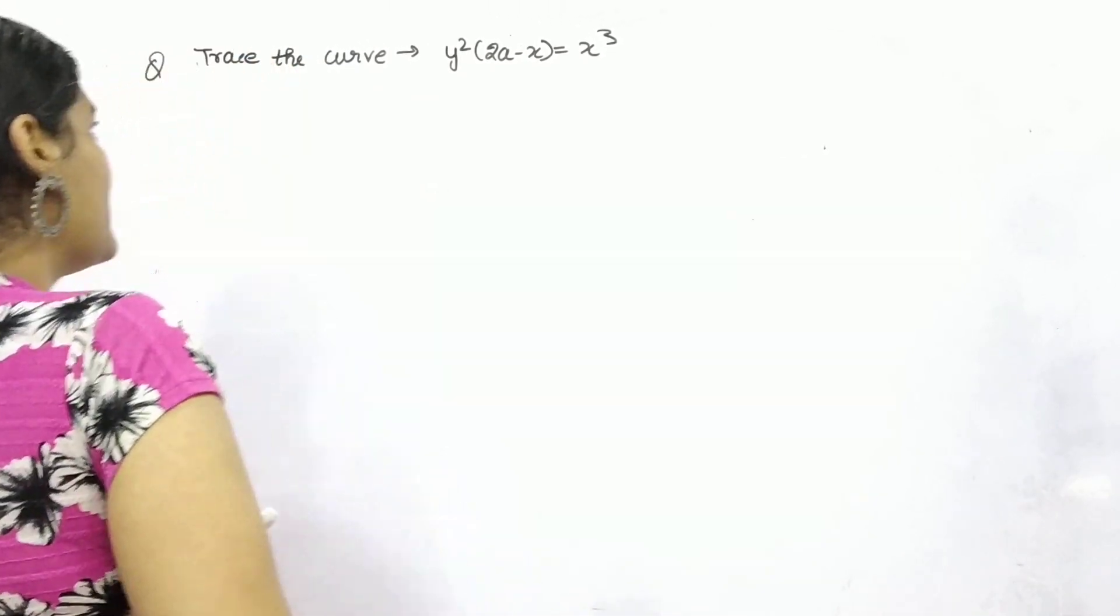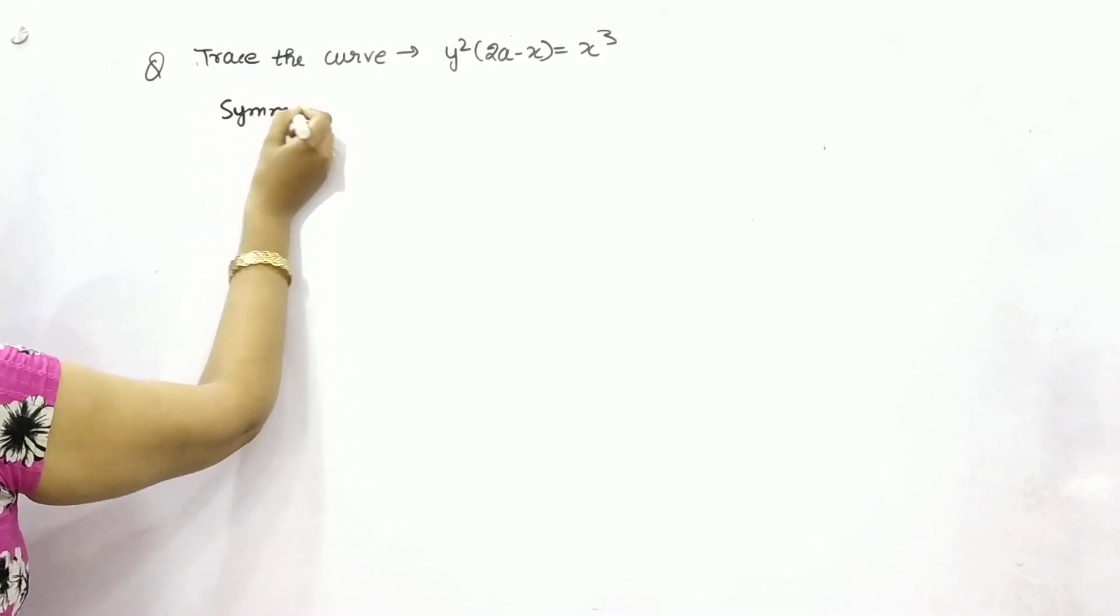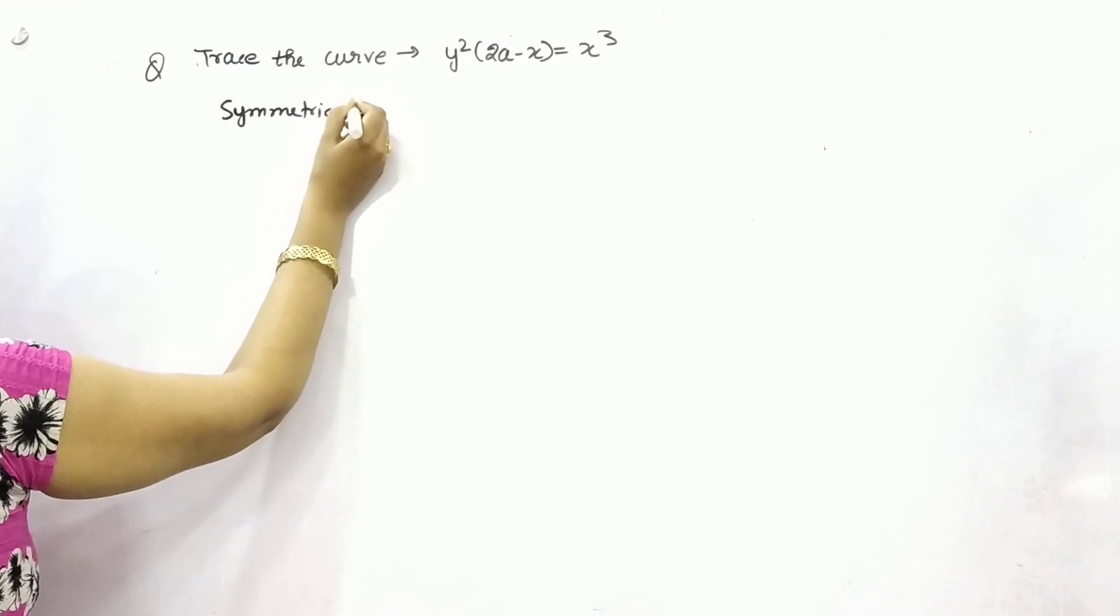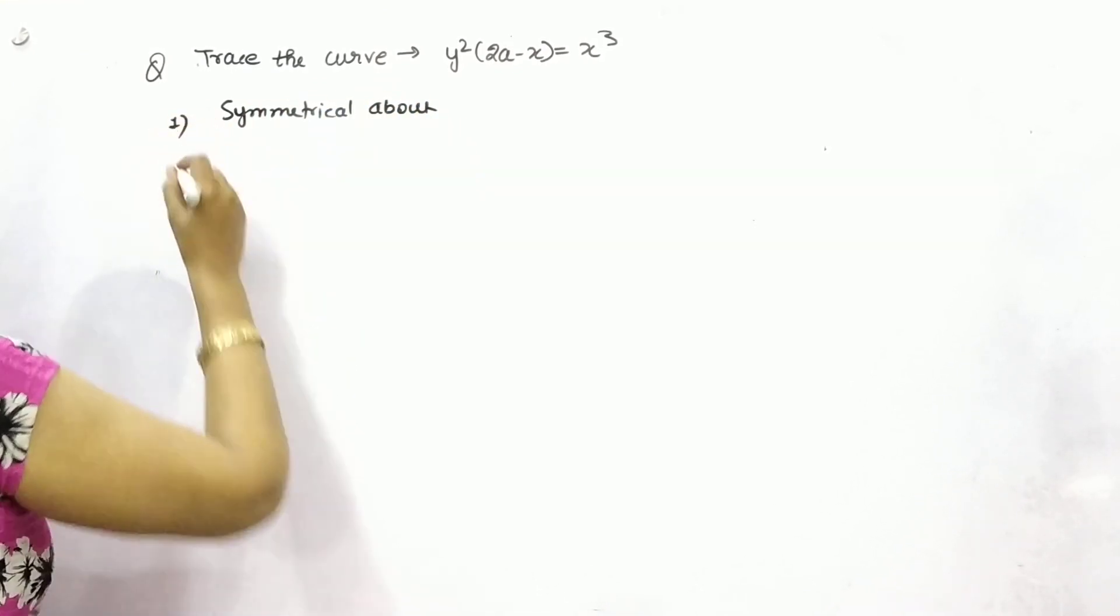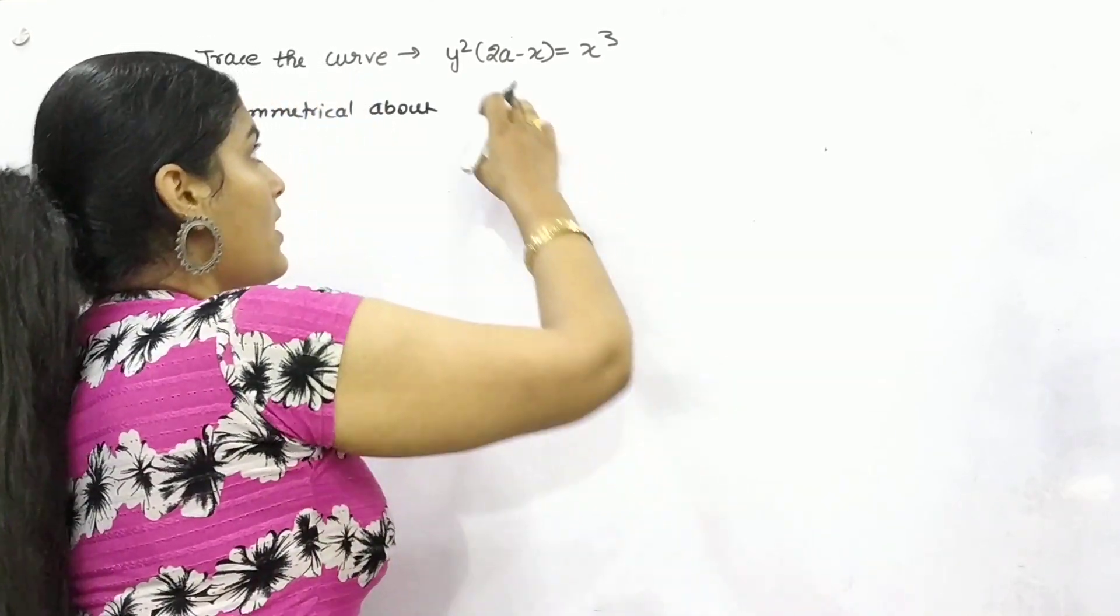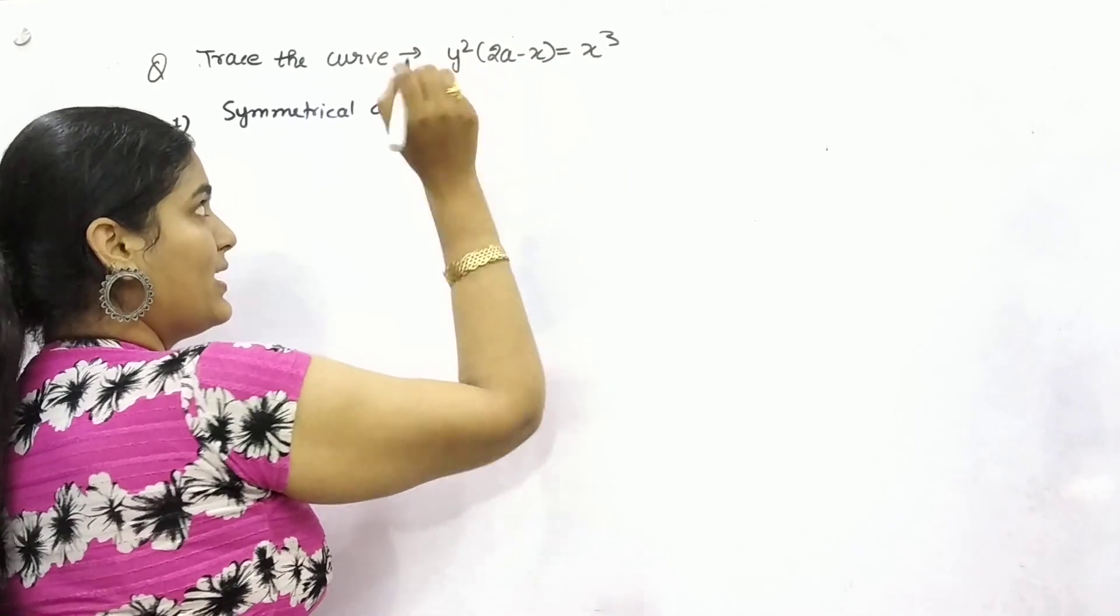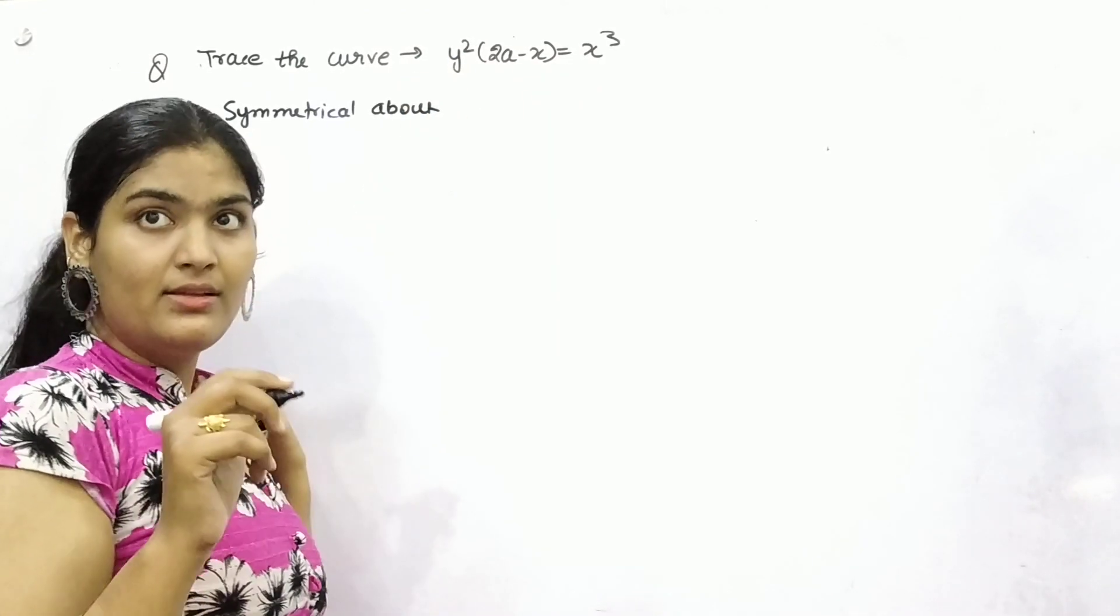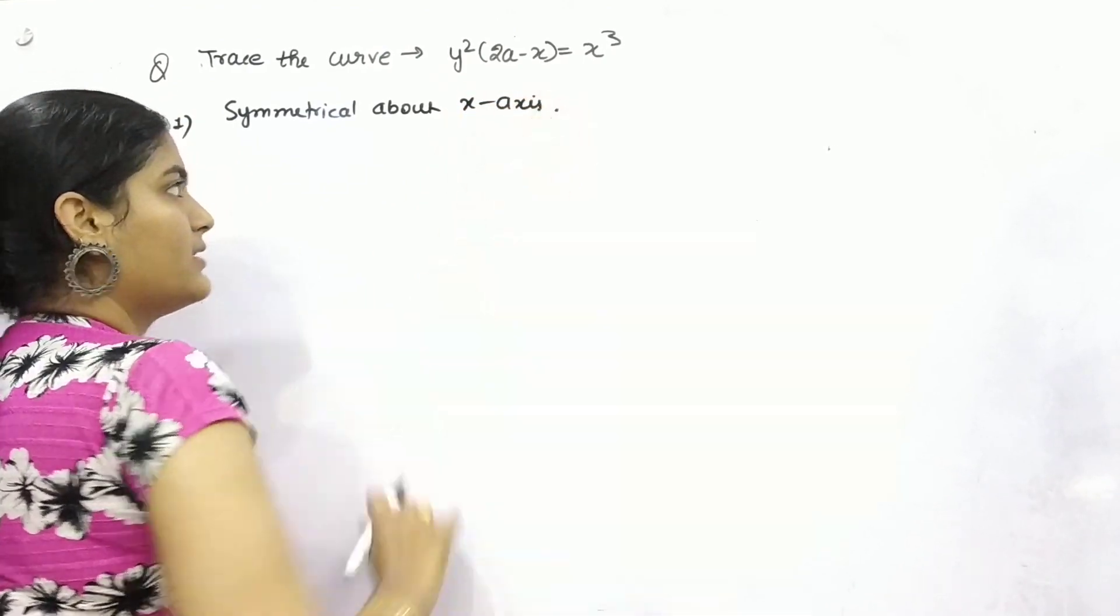Let's begin with symmetry. Can I ask you, what is this curve symmetrical about? Which axis? You need to find out the even powers of variables. So x is in odd powers, y is in even. Because even powers of y are there, this curve is symmetrical about x-axis.